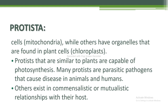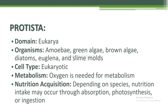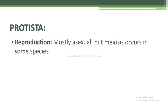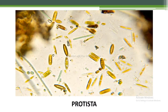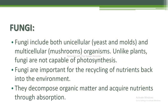Others exist in commensalistic or mutualistic relationships with their host. Domain is Eukarya. Organisms include amoebae, green algae, brown algae, diatoms, euglena, and slime molds. Cell type is eukaryotic. Metabolism: oxygen is needed. Nutrition acquisition depends on species and may occur through absorption, photosynthesis, or ingestion. Reproduction is mostly asexual, but meiosis occurs in some species. This is Protista as shown in the figure.